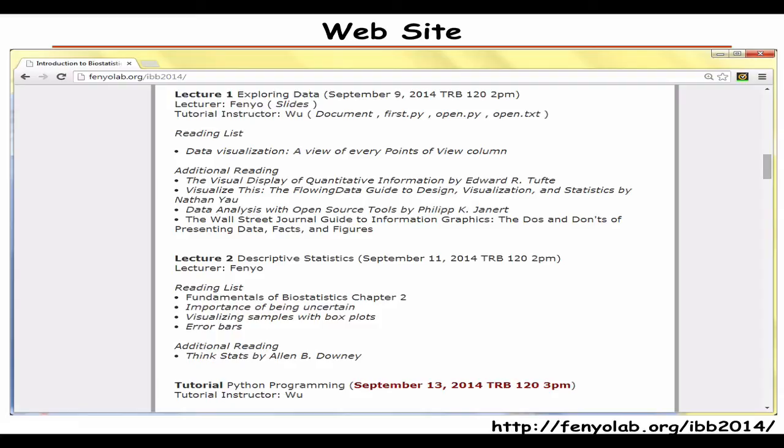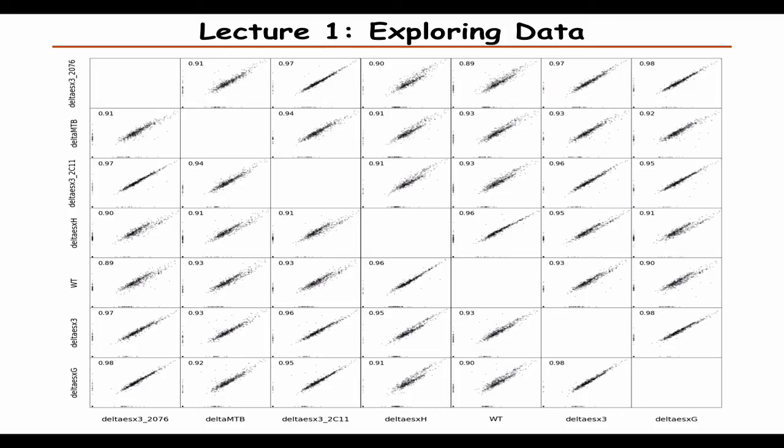So now I'm going to start and just go through the whole course quickly, so you get an overview of everything we're going to talk about. This first lecture is about exploring data — looking at small datasets, how to best visualize them, and then going to very large datasets. This example shows seven different samples analyzed with proteomics, and how the different samples correlate with each other.